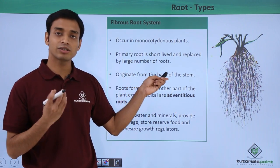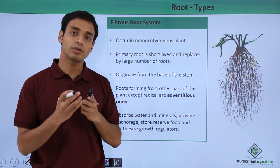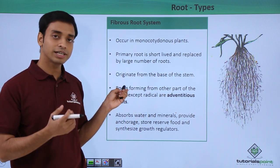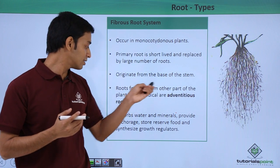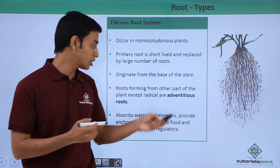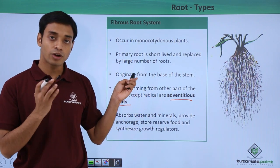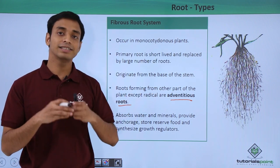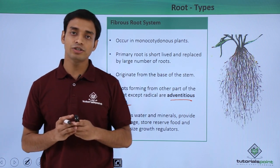These replacement roots originate from the base of the stem, not from the radicle. Roots which form from parts other than the radicle are known as adventitious roots. In the tap root system, the primary root forms from the radicle itself, but here roots forming from parts other than the radicle are adventitious roots.